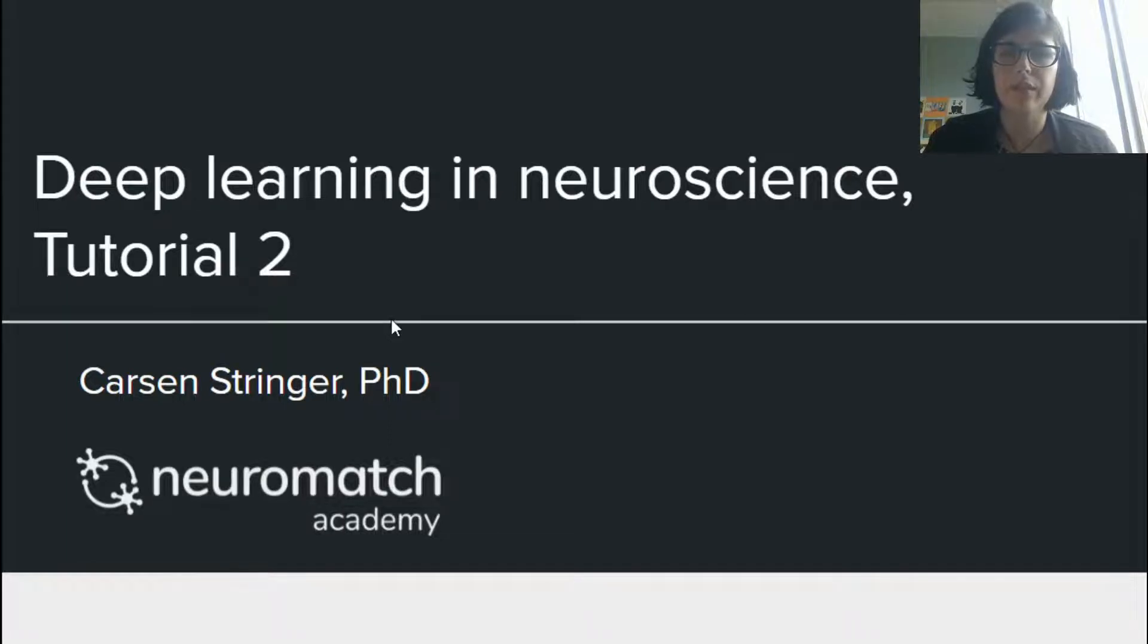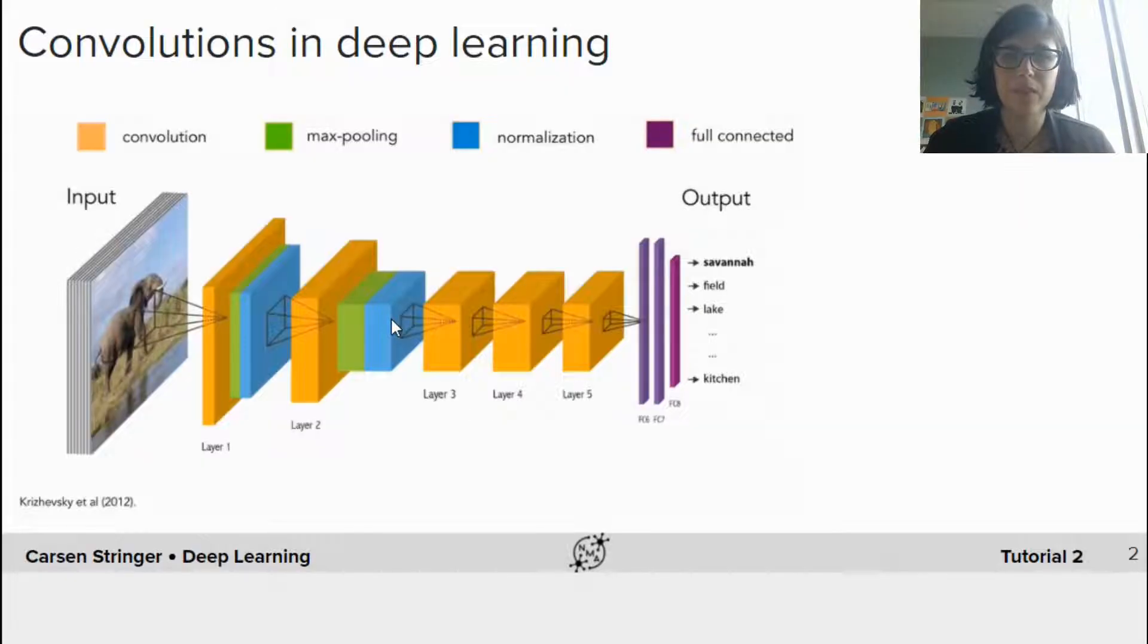Welcome to the second tutorial on Deep Learning in Neuroscience. Recall Otto Leva's discussion of convolutions in the introduction. Convolutional neural networks with several layers revolutionized the deep learning field, and in particular, AlexNet, depicted here, was the first neural network to excel on the ImageNet classification task.